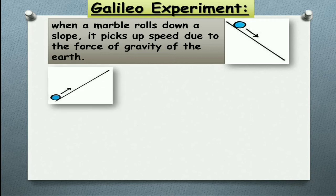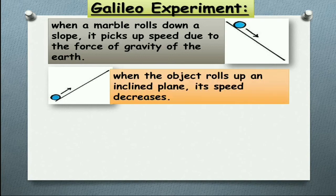Again, he took the same inclined plane, but he rolls up the marble now. When the marble rolls up an inclined plane, its speed decreases because of the gravitational force. So clearly here an external force is acting on it.